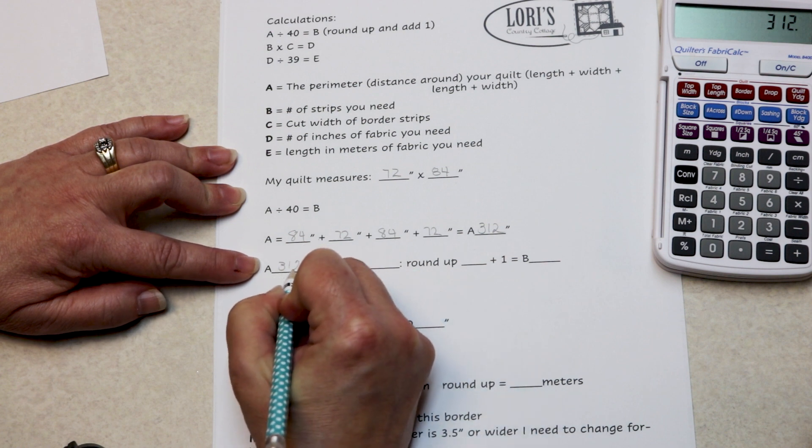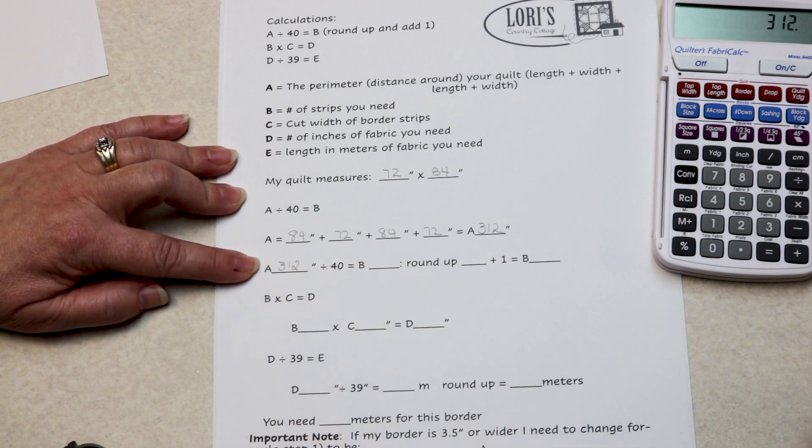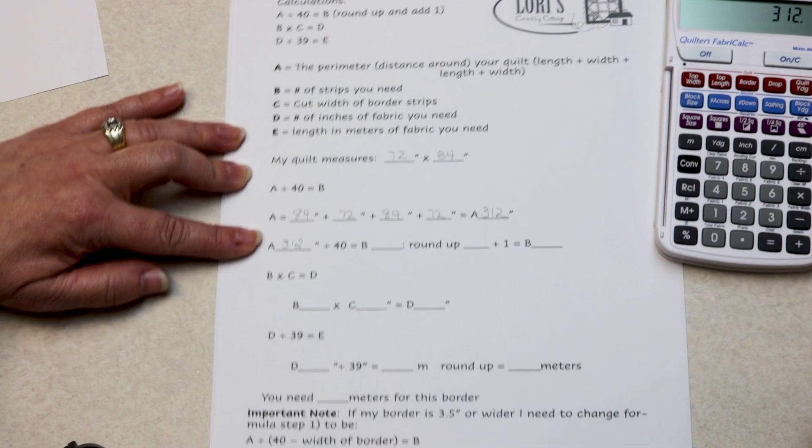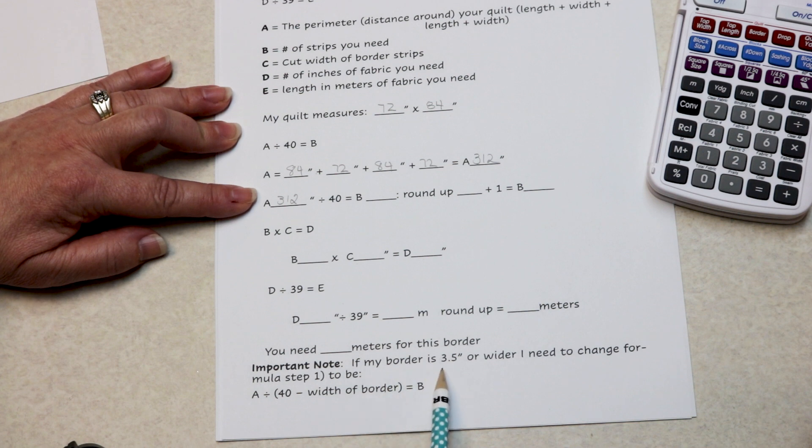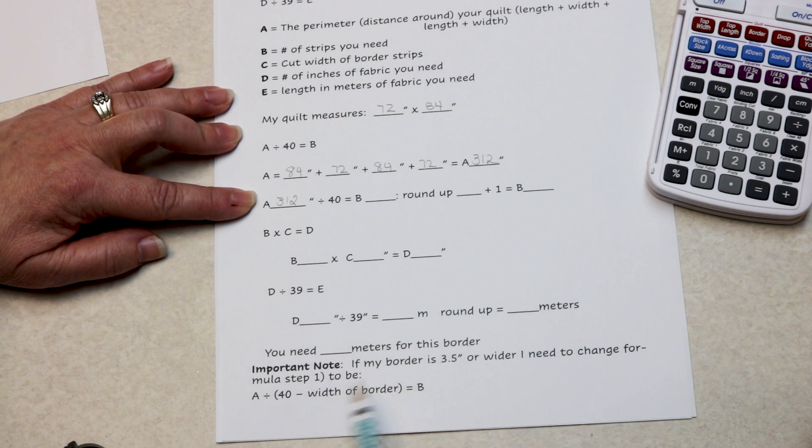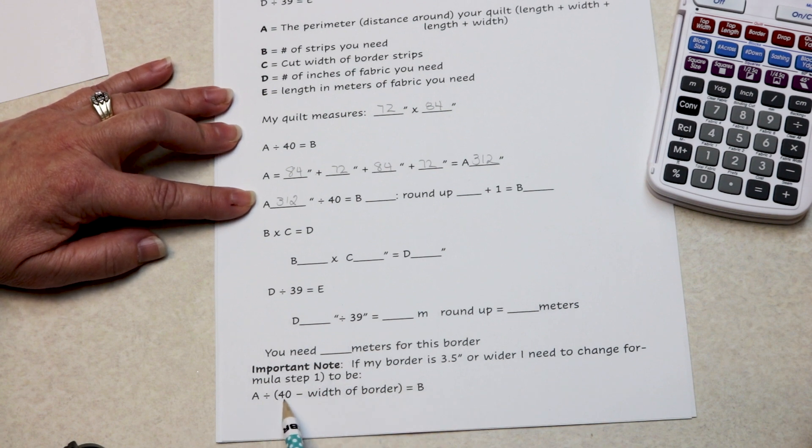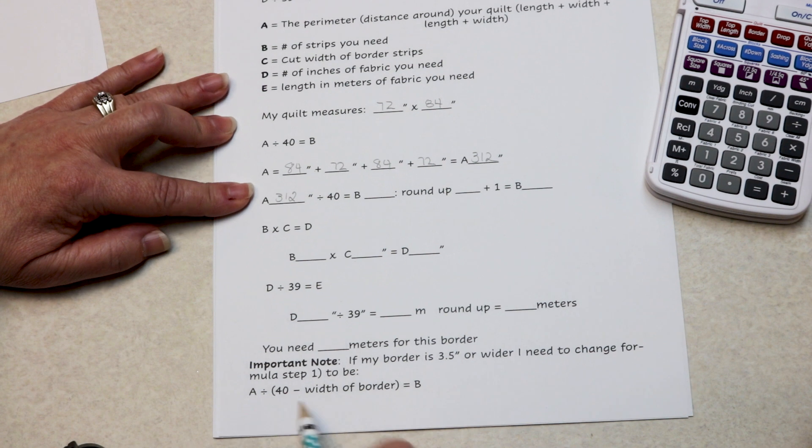312 inches divided by 40. Oh, we have a new calculation. If my border is 3.5 inches or wider, I need to change the formula for step one to be A divided by 40 minus the width of my border. So 40 minus my 6.5.